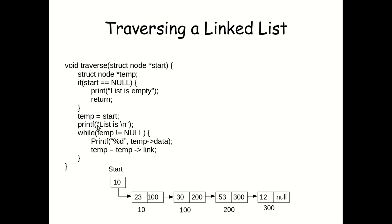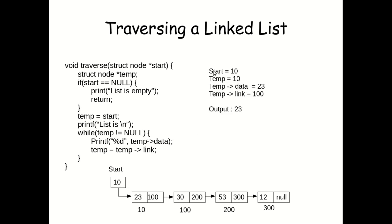Here in the printf we will print 'list is' and then start printing the elements. We have declared a while loop where we are checking for temp not equal to null — if temp is not equal to null, we will proceed.